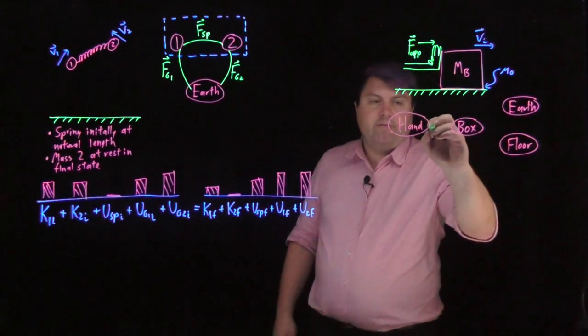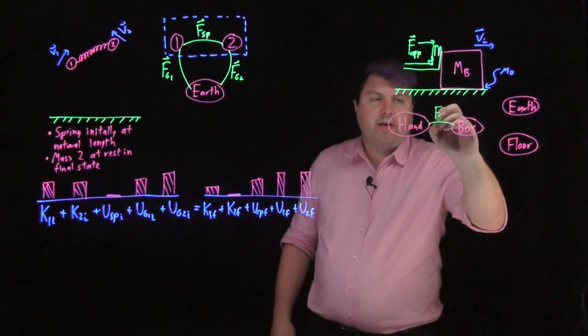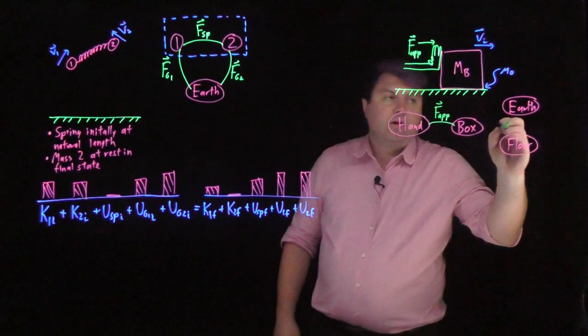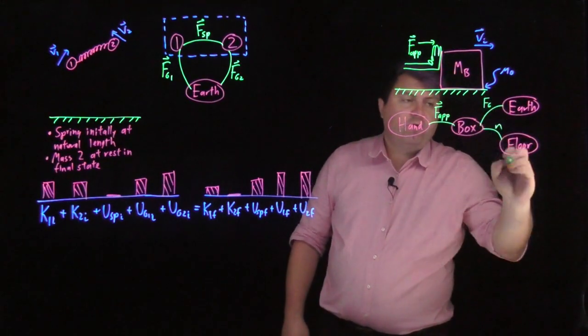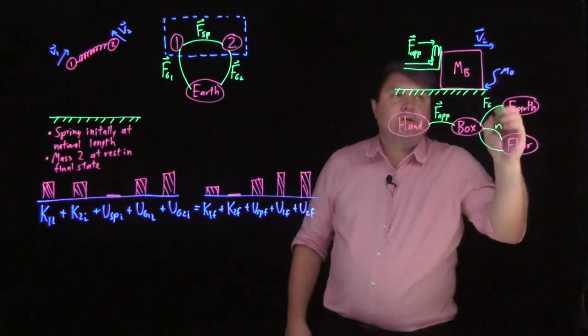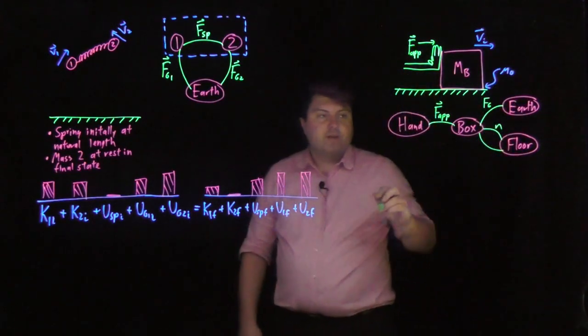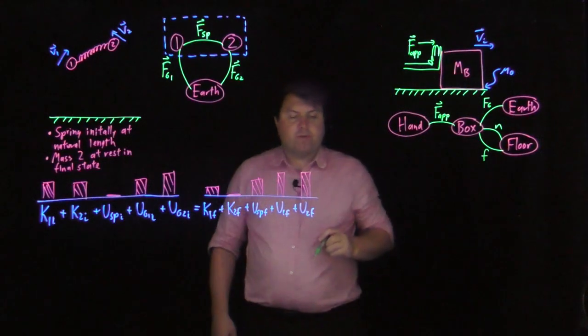So the forces that we have are the applied force from the hand. We have force of gravity from the Earth. We have the normal force from the floor. And we're told a coefficient of friction. So we're going to have to have a friction force from the floor as well.